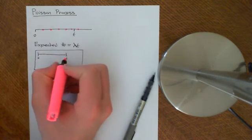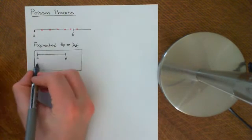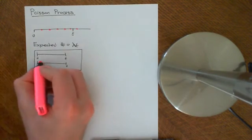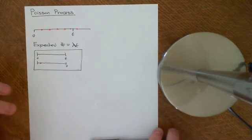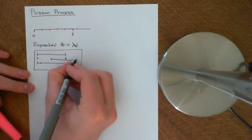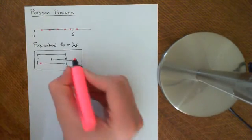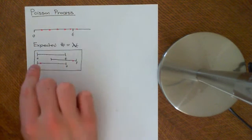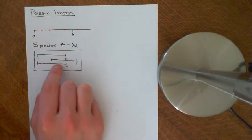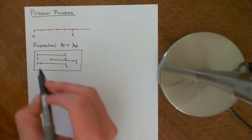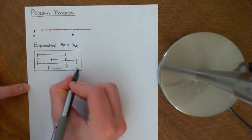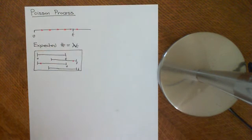So for instance, one outcome is that absolutely no emails come in between 0 and t. Another outcome is that one email comes in and it arrives at some particular time. Another outcome would be that one email comes in but arrives at a different, much later time. You'd have all the possibilities for how one email can arrive — it can arrive anywhere between 0 and t, and we assume it's uniformly likely to arrive anywhere. Of course more than one email can come in, so you could have two emails, three emails, etc.